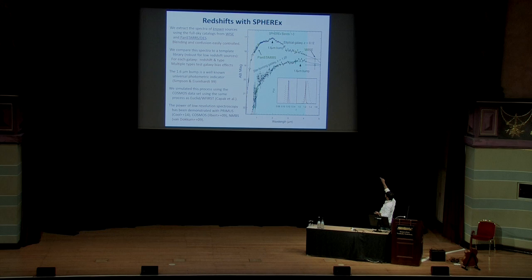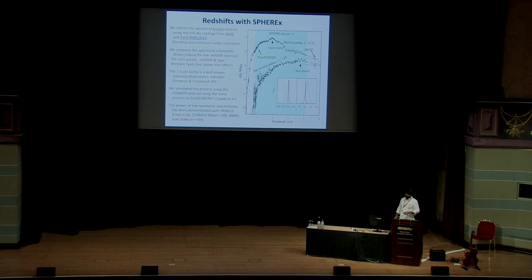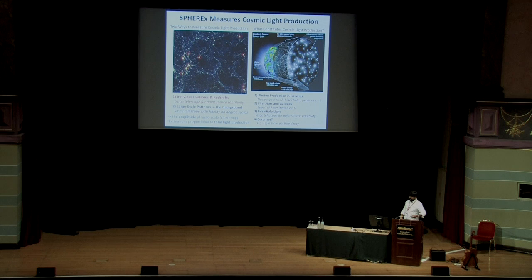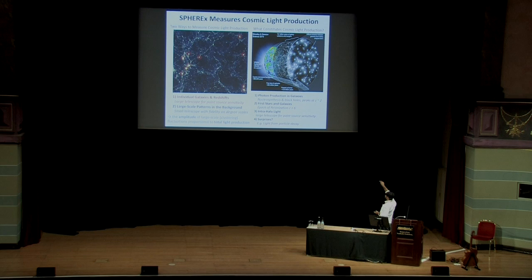Instead of broad-band photometry, we have narrow-band photometry. One of the things we will pick up is the 1.6 micron bump, which turns out to be a good redshift indicator, and we have the spectral resolution to do that. Related to what I was discussing about the CIB, SPHEREx is designed very well to map the cosmic light production—the cosmic infrared background. We can measure fluctuations and look for clustering, and the idea is to characterize things like the intra-halo light as well as we can.